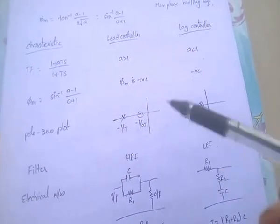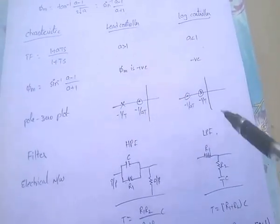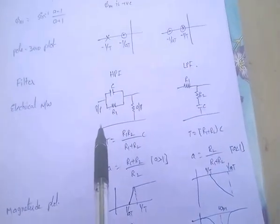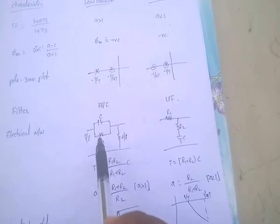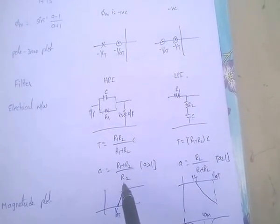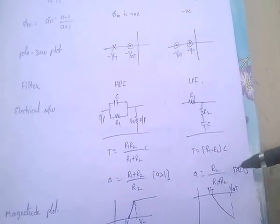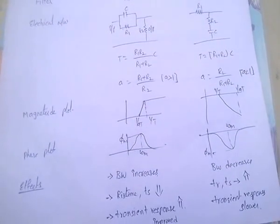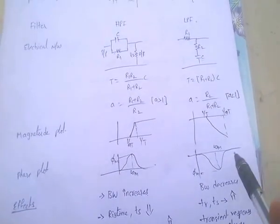A lead controller acts as a high-pass filter, and a lag controller acts as a low-pass filter. For the electrical network of the lead controller: T = (R2/(R1+R2))·C and A = (R1+R2)/R2, and A must be greater than 1. For the lag controller: T = (R1+R2)·C and A = R2/(R1+R2).